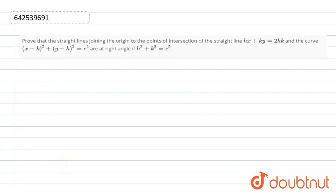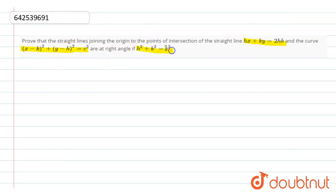Hello friends, so the question is: Prove that the straight line joining the origin to the points of intersection of the straight line Hx plus Ky equals 2hk and the curve (x minus k) squared plus (y minus h) squared equals c squared are at right angles if h squared plus k squared equals c squared.